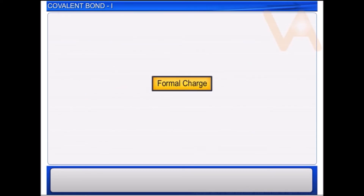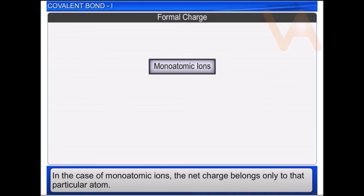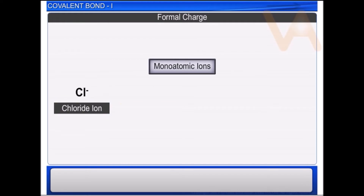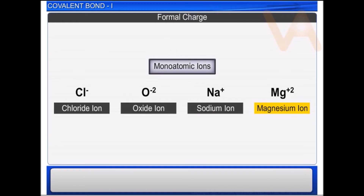Let us now discuss about formal charge. In the case of monoatomic ions — such as chloride ion, oxide ion, sodium ion, magnesium ion — the net charge belongs only to that particular atom. In the case of polyatomic ions, the net charge is possessed by the ion as a whole and does not belong to any particular atom. But we can assign a formal charge on each atom in the polyatomic ion. Formal charge equals the total number of valence electrons in the free atom, minus the total number of non-bonding electrons, minus half of the total number of bonding electrons. While counting the electrons on an atom in a molecule, it is assumed that an atom owns one electron of each shared pair and two electrons of the lone pair.